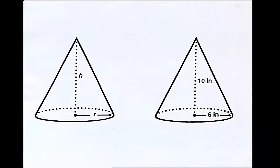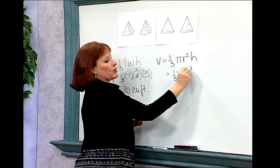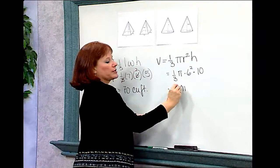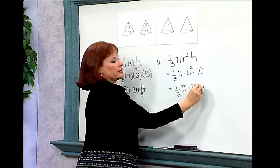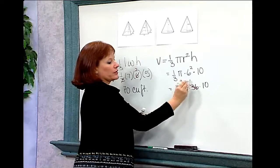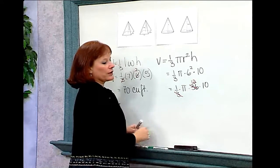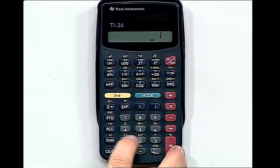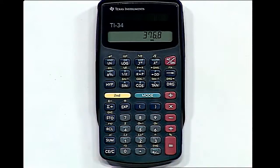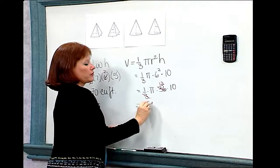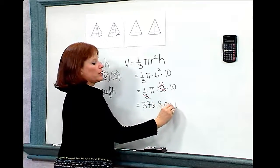In the case of the cone we have here, we'll take one-third times pi times the radius, which is 6, squared, times the height, which is 10. So that's one-third times pi times 36 times 10. I simplify by noting that 3 goes into 36 twelve times, then use the calculator: 3.14 times 12 times 10 gives a volume of 376.8 cubic inches.